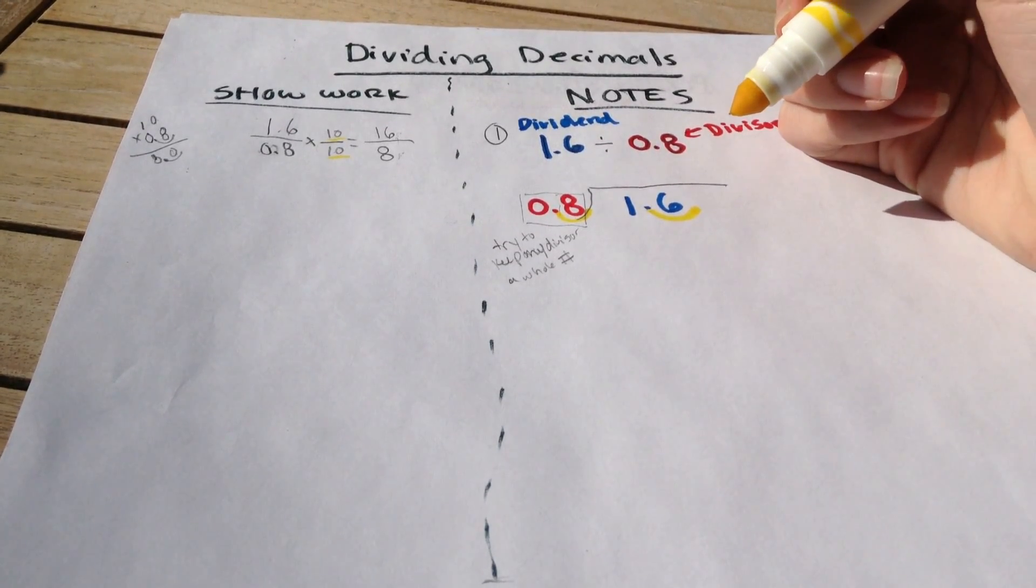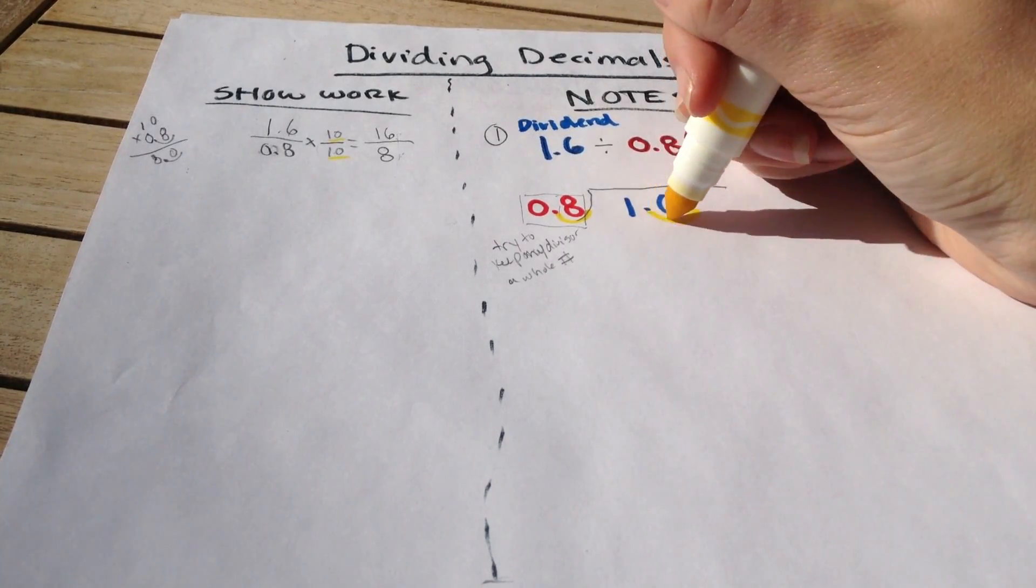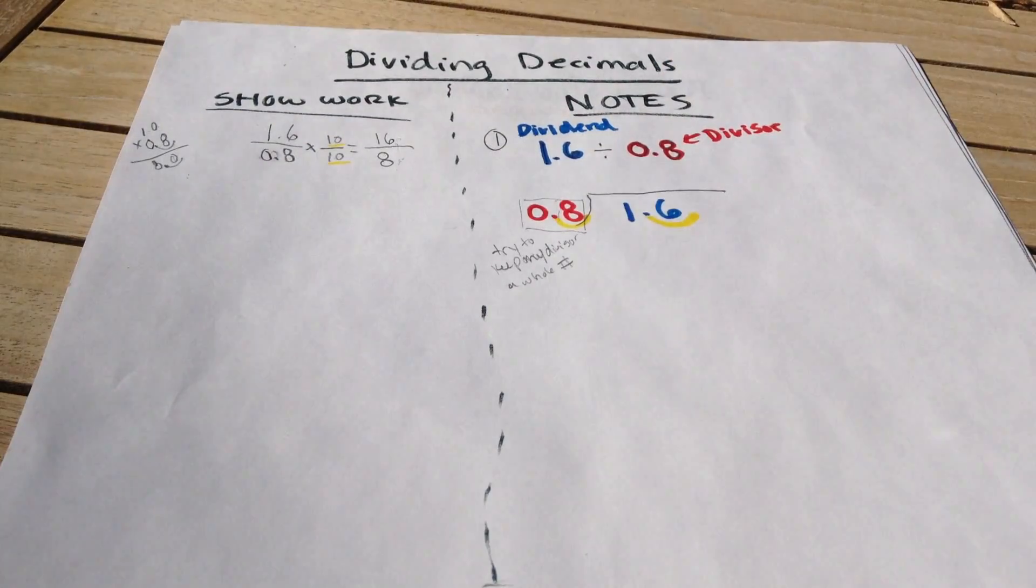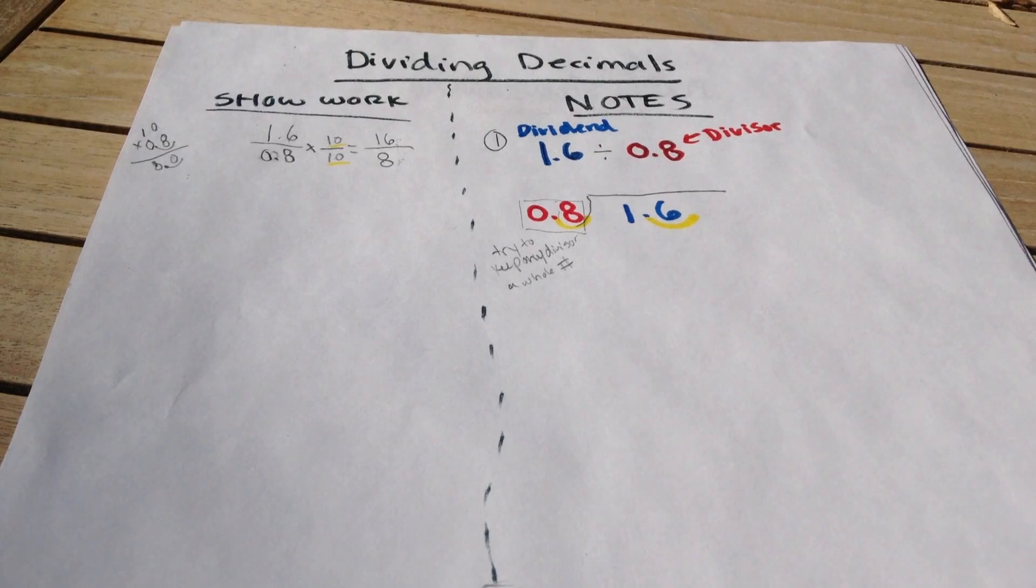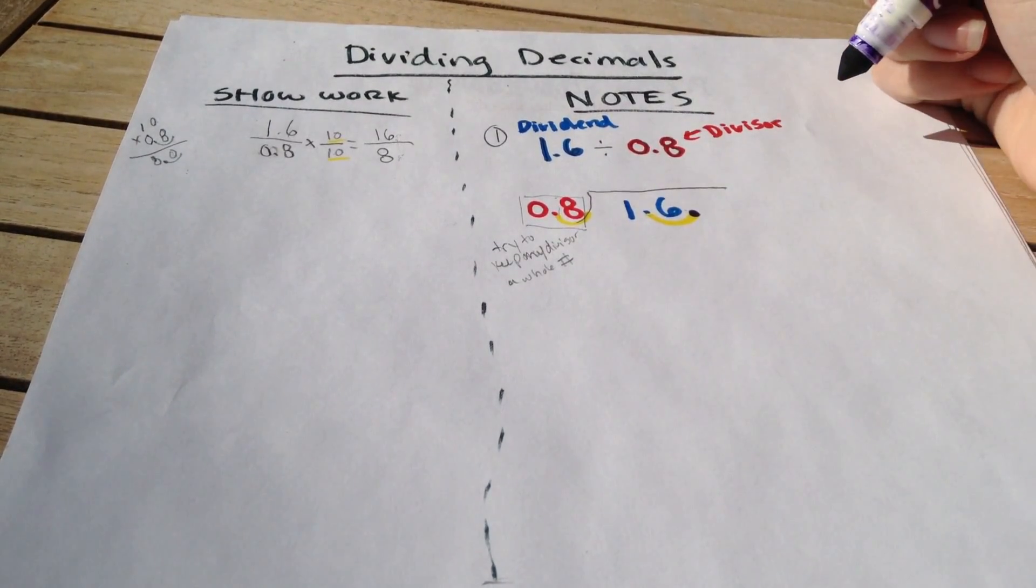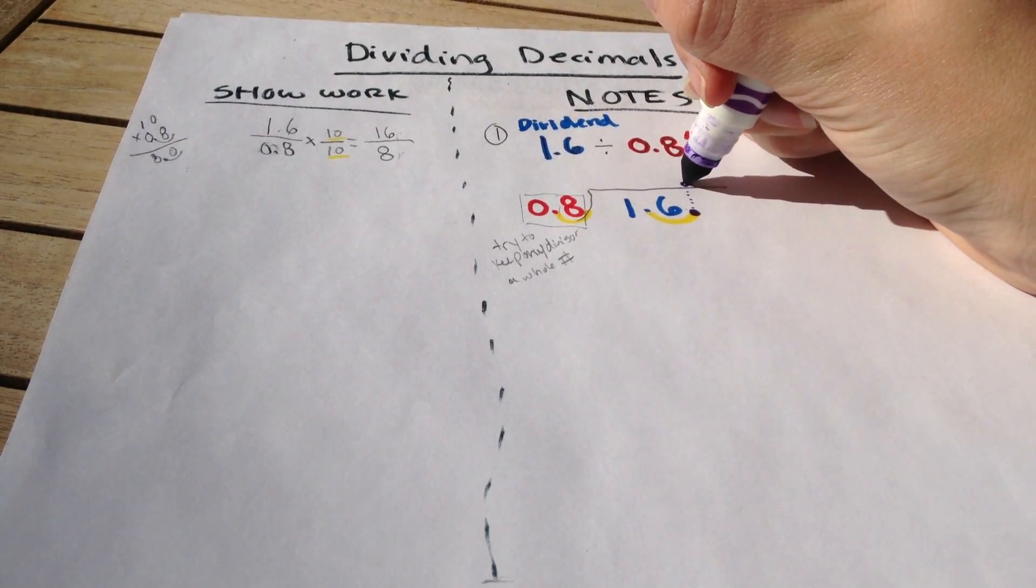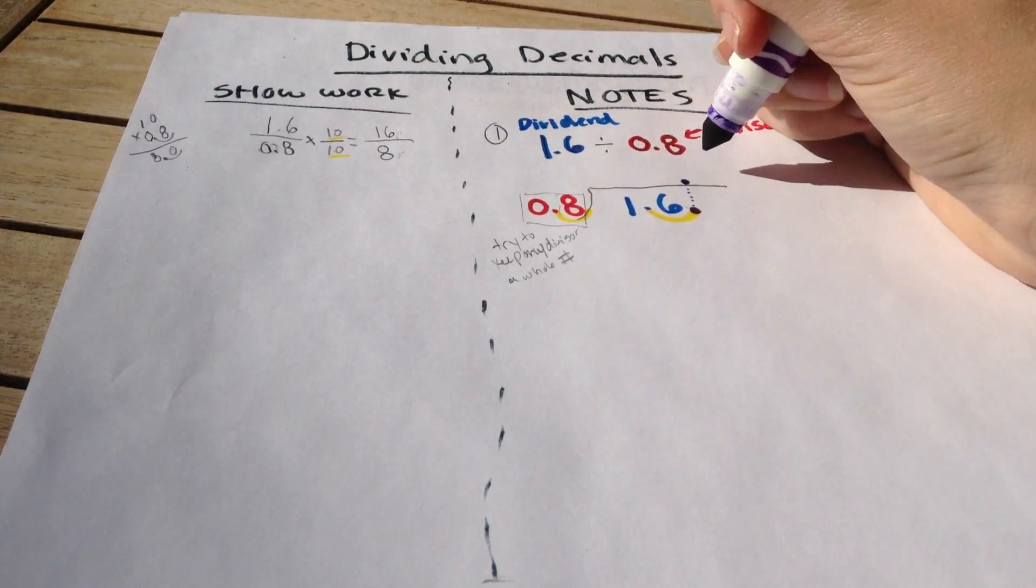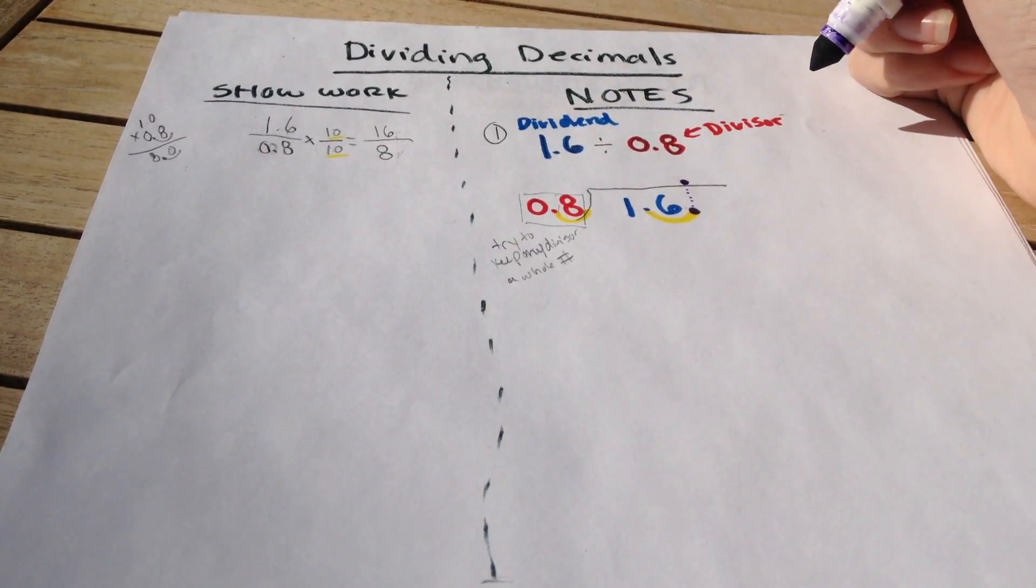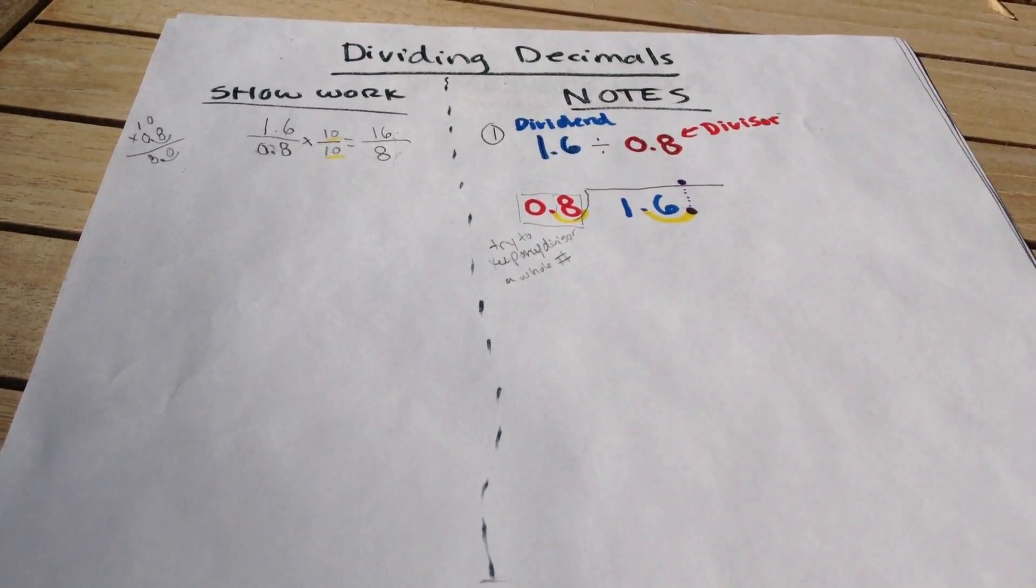Now here is the big thing. When I am moving my dividend, and I'm moving the decimal for that, I then create a new decimal at the end. I need to make sure that I then continue that new decimal up to the top part where my quotient or my answer is going to be. So I need to make sure that this step happens or else I'm going to get the wrong answer.